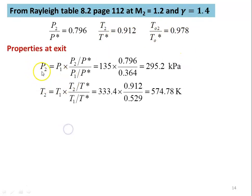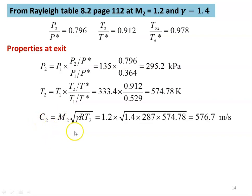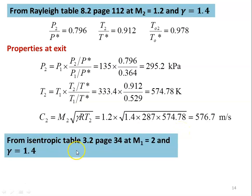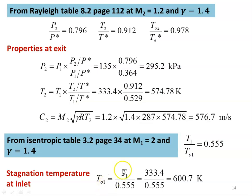Properties at the exit: P2 = 135 × 0.796/0.364 = 295.2 kPa. T2 = 333.4 × 0.912/0.529 = 574.78 Kelvin. Velocity C2 = M2 × √(γRT2) = 1.2 × √(1.4×287×574.78) = 576.7 m/s. From isentropic table 3.2, page 34, at M1=2, gamma=1.4: T1/T01=0.555. Stagnation temperature: T01 = 333.4/0.555 = 600.7 Kelvin.